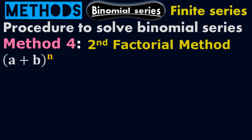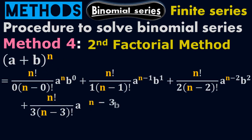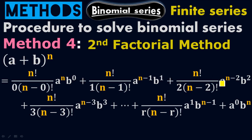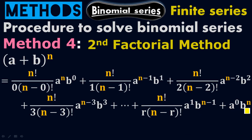If we have (a + b) to the n, it equals n factorial over 0 times (n minus 0) factorial times a to the n times b to the 0, plus n factorial over 1 times (n minus 1) factorial times a to the (n minus 1) times b to the 1, plus n factorial over 2 times (n minus 2) factorial times a to the (n minus 2) times b squared, plus n factorial over 3 times (n minus 3) factorial times a to the (n minus 3) times b cubed, and so on. You can increase more terms like n factorial over r times (n minus r) factorial times a to the 1 times b to the (n minus 1), plus a to the 0 times b to the n.